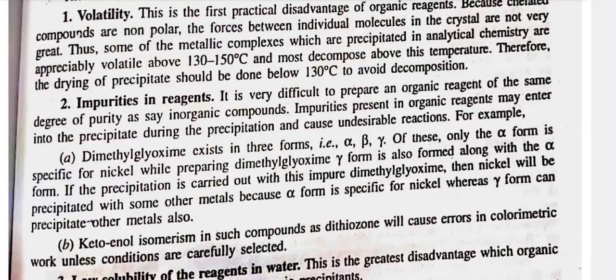Second, impurities in reagents — it is very difficult to prepare an organic reagent of the same degree of purity as inorganic compounds. Impurities present in organic reagents may enter into the precipitate during precipitation and cause undesirable reactions. For example, dimethylglyoxime exists in three forms: alpha, beta, and gamma. Of these, only the alpha form is specific for nickel. While preparing dimethylglyoxime, the gamma form is also formed along with the alpha form. If precipitation is carried out with this impure dimethylglyoxime, nickel will be precipitated with some other metals, because alpha form is specific for nickel whereas gamma form can precipitate other metals too.